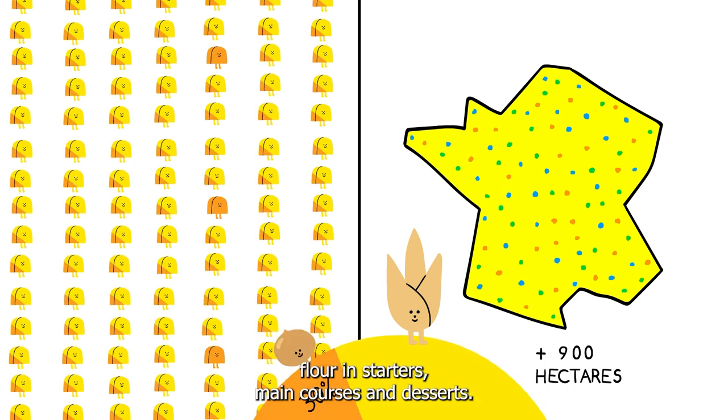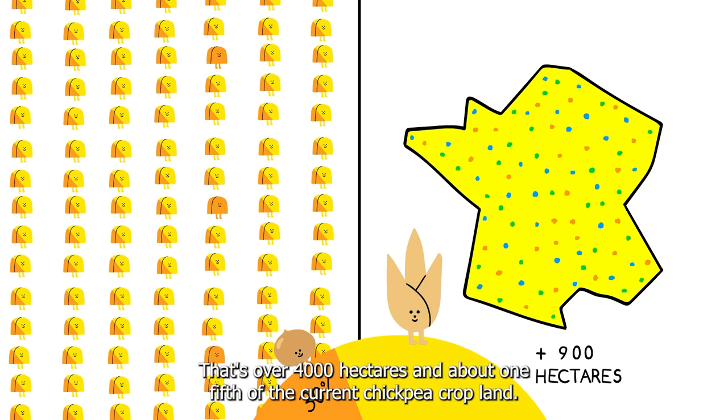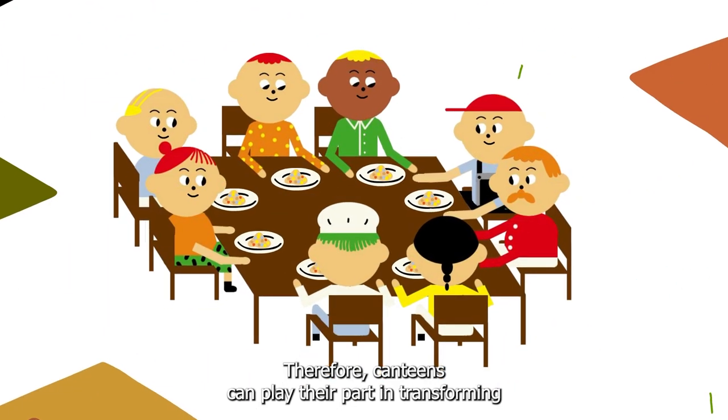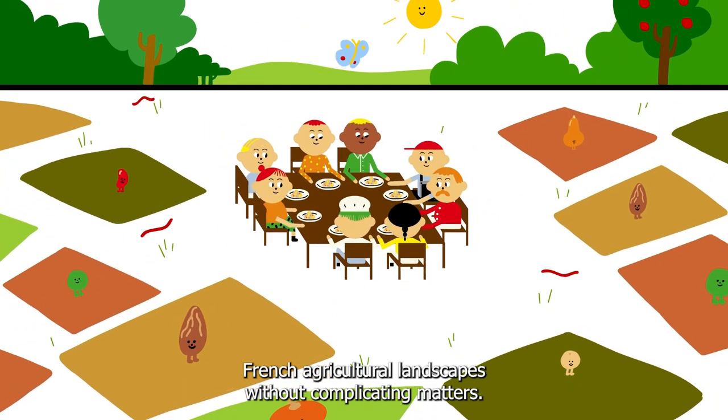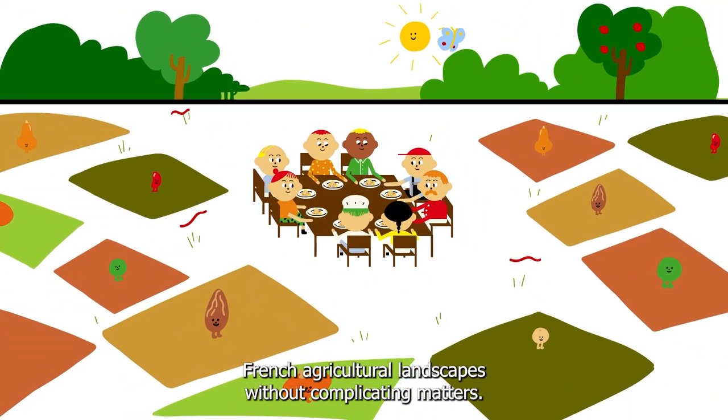By replacing 30% of wheat flour with chickpea flour in starters, main courses and desserts, that's over 4,000 hectares and about one-fifth of the current chickpea cropland. Therefore, canteens can play their part in transforming French agricultural landscapes without complicating matters.